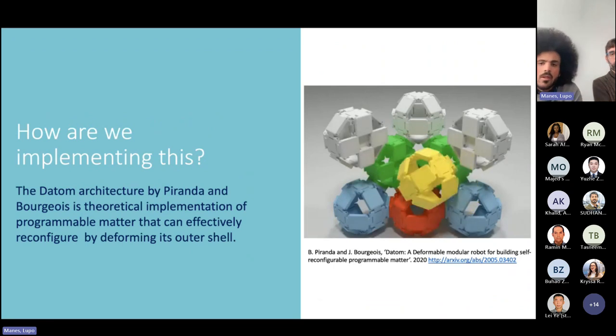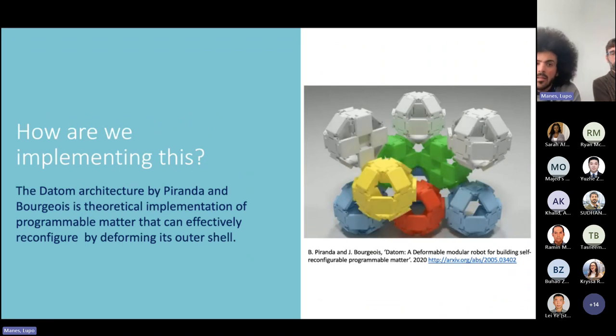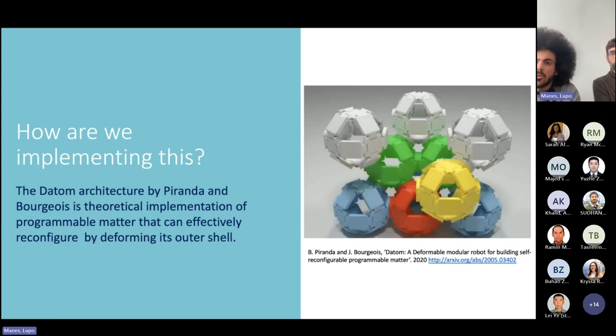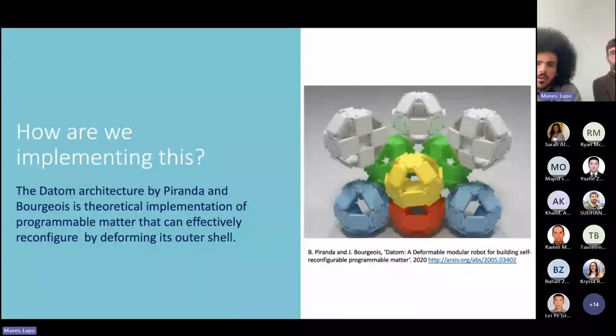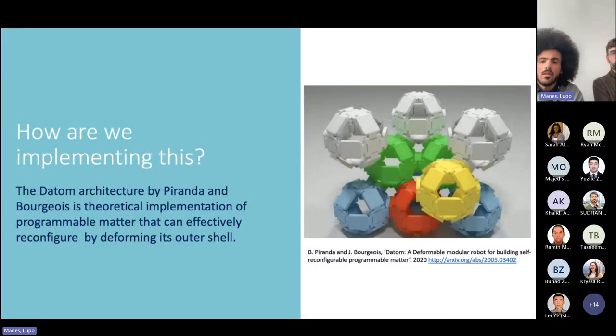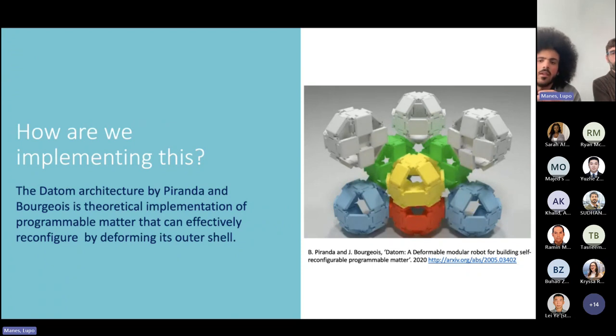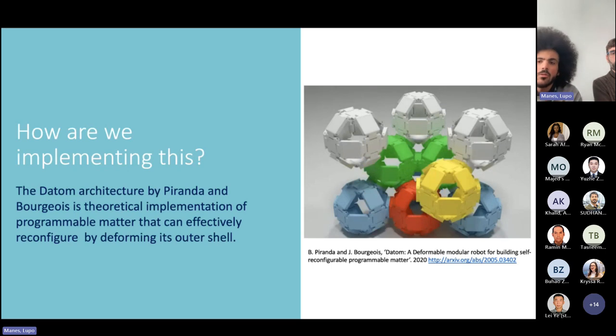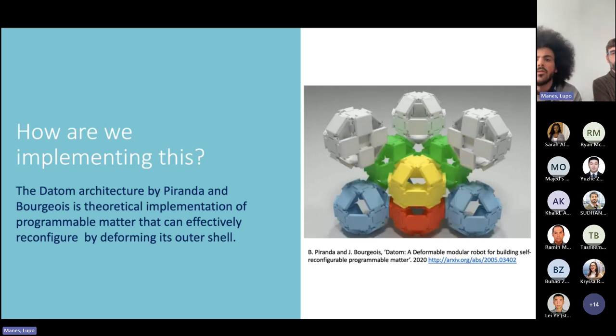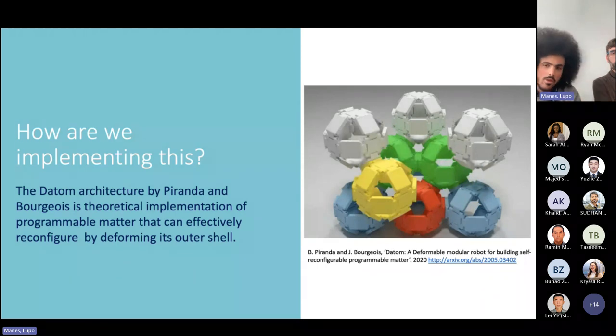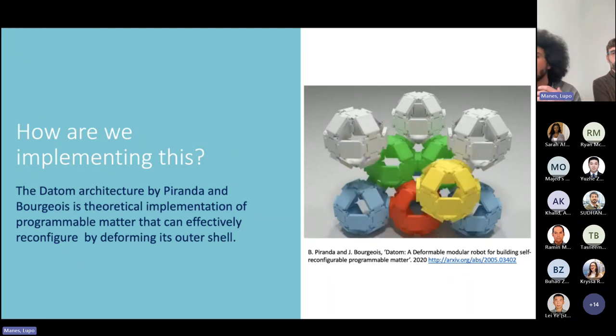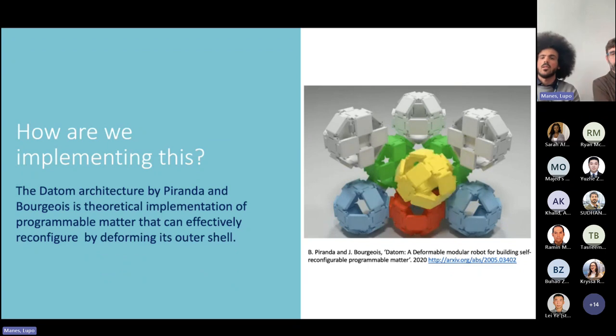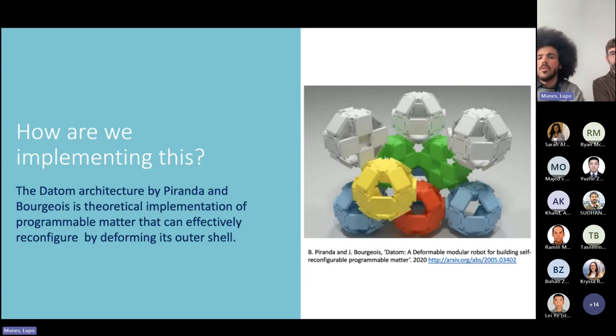In literature we found this example of programmable matter called the datum. This has been proposed by Piranda and Bourgeois, and it's at the moment purely theoretical. Basically, you can see there are robots that can move across the structure, and they do so by deforming the outer shell. This deformation we can use for the entire structure they create.